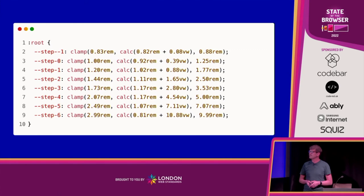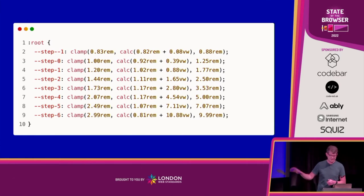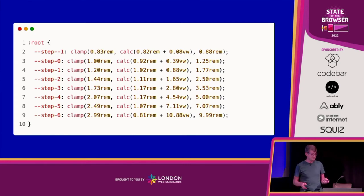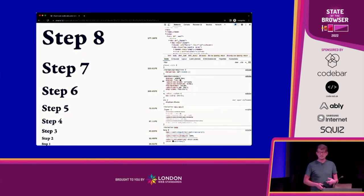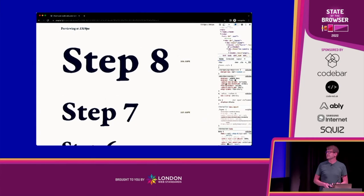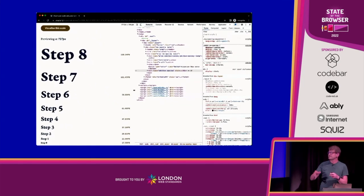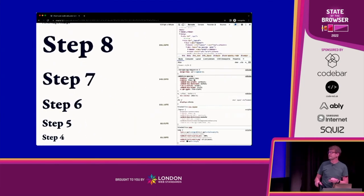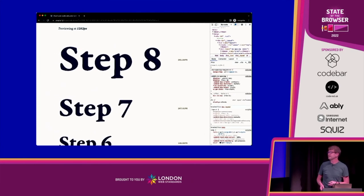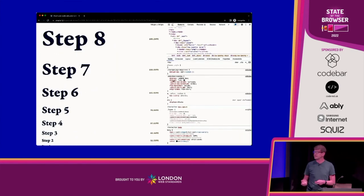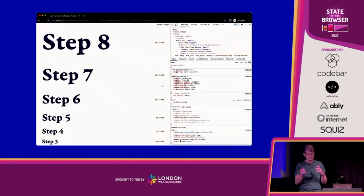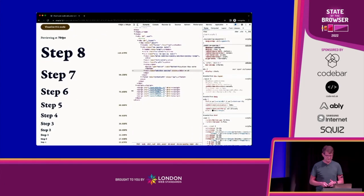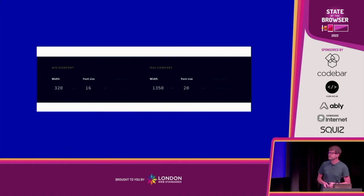What it spits out is some ugly CSS with random-looking values, but it doesn't matter because we set it and forget it — put it at the top as constants. Then we've got our responsive type scale. Looking at Utopia's demo, you can see step eight is absolutely massive when you increase the viewport width, and goes nice and small at the bottom — that's the beauty of having two type scales in place.